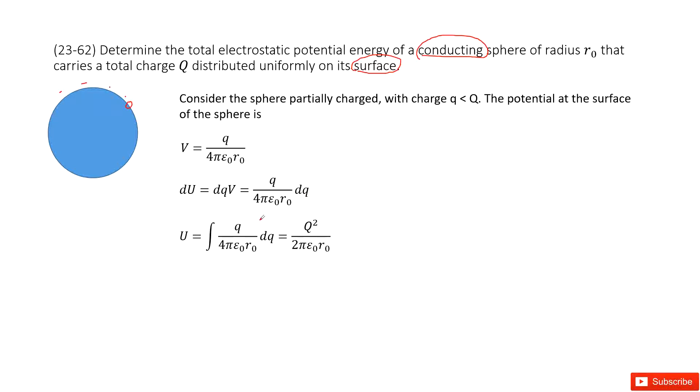We can do the integral for U with dQ. The integral of dQ just gets the sum of all these small fractions of charges, all of them distributed at the surface. So the total is Q² over 2πε₀r₀.